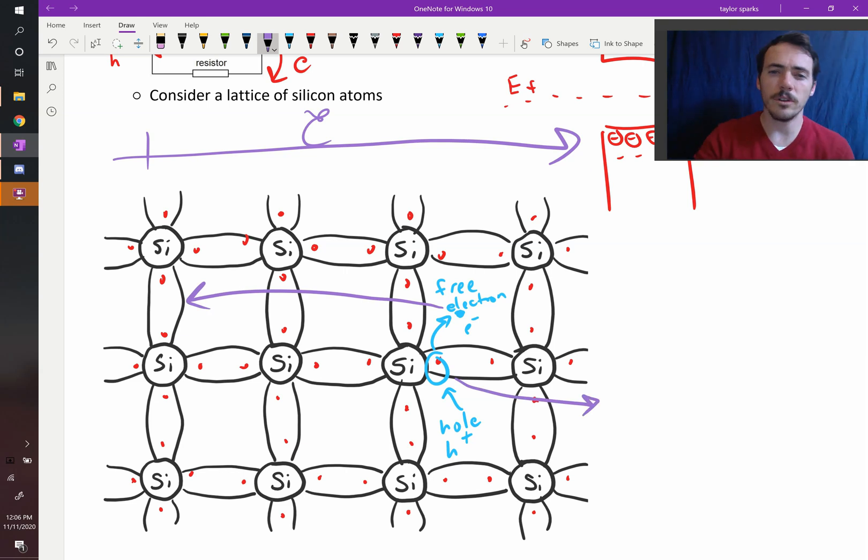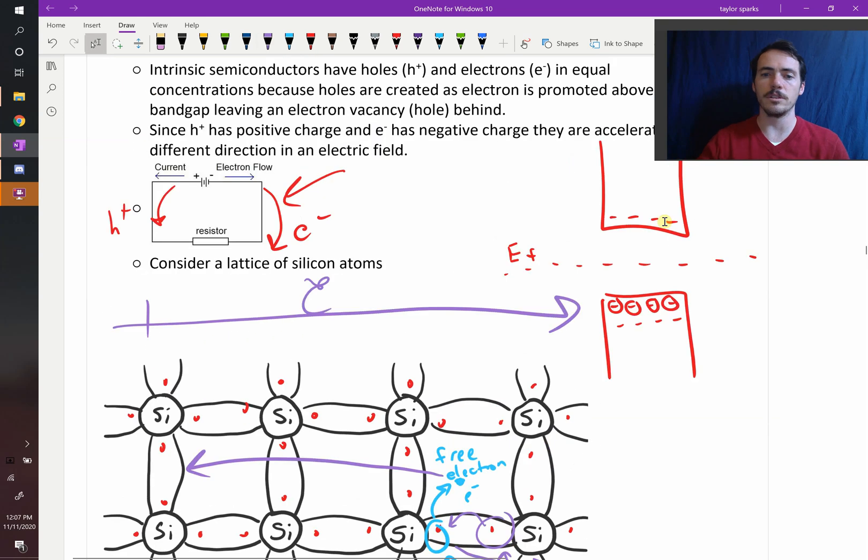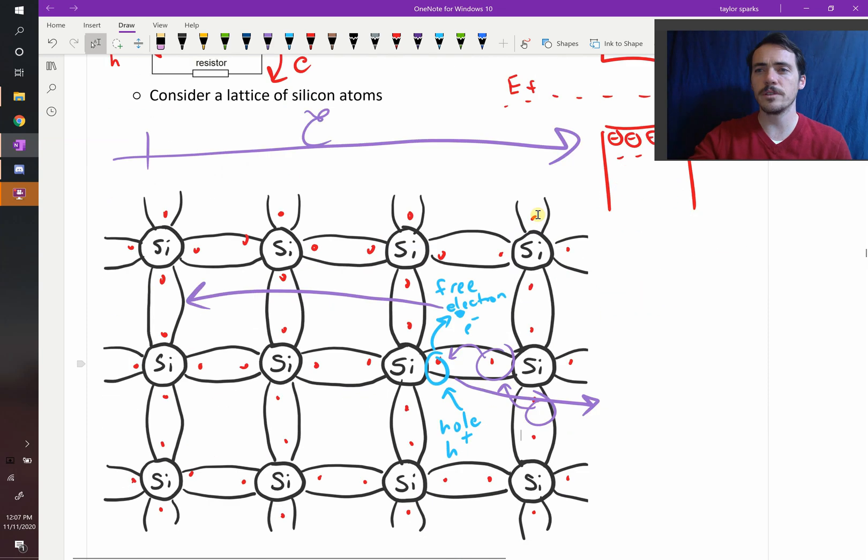Now, how does the hole travel? It travels by the nearby electron coming and occupying that hole, and now the hole has moved to right here, and then maybe this one will occupy that hole, and now it's moved to there. So it moves by hopping in that lattice, and the free electron is now in an empty conduction band, so it just essentially moves without worrying about holes coming, an electron coming and filling the hole where it was.